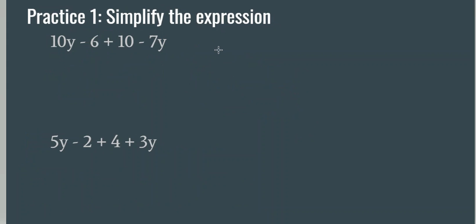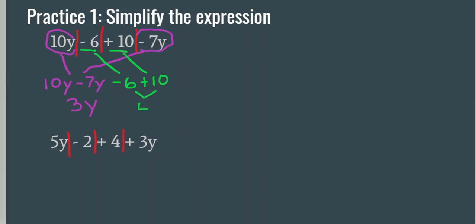Let's try another one — simplify the expression. Step one, separate the terms by putting a line in front of every plus or minus sign. Step two, find my like terms. I see I have 10y and a negative 7y in my first example, so 10y minus 7y — and 10 minus 7 is 3, so that's 3y. I also see I have a negative 6 and a plus 10. Negative 6 plus 10 is 4, and since that's positive I put a plus in front. So the final answer is 3y plus 4.